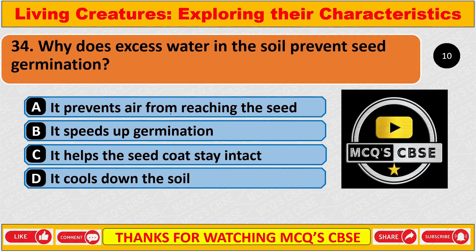Why does excess water in the soil prevent seed germination? The correct answer is A: It prevents air from reaching the seed.